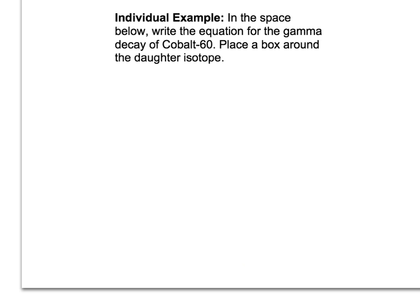First thing we need to realize is the parent isotope, Cobalt-60. So I write cobalt, and I know the mass is 60, and then I look up on the periodic table, and I see that cobalt has an atomic number of 27.